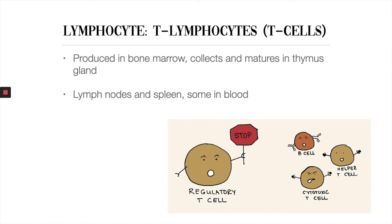Let us now take a look at T lymphocytes, also known as T cells. T cells are produced in the bone marrow like all red and white blood cells. The name T cell comes from the organ where they mature, which we call the thymus. They are then distributed to the lymph nodes and spleen, and some are found in the blood.